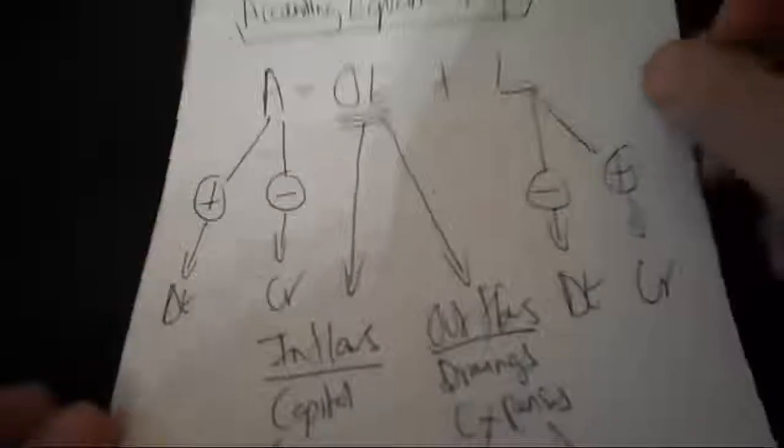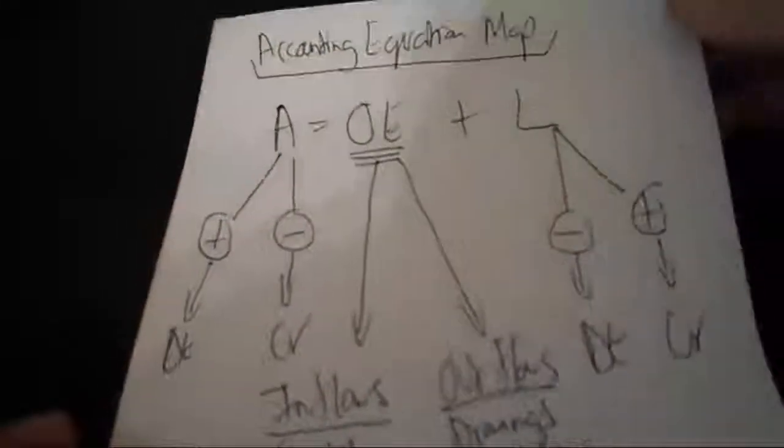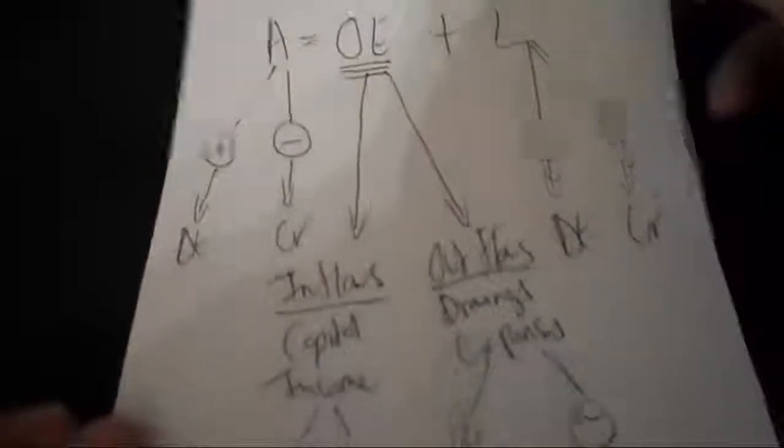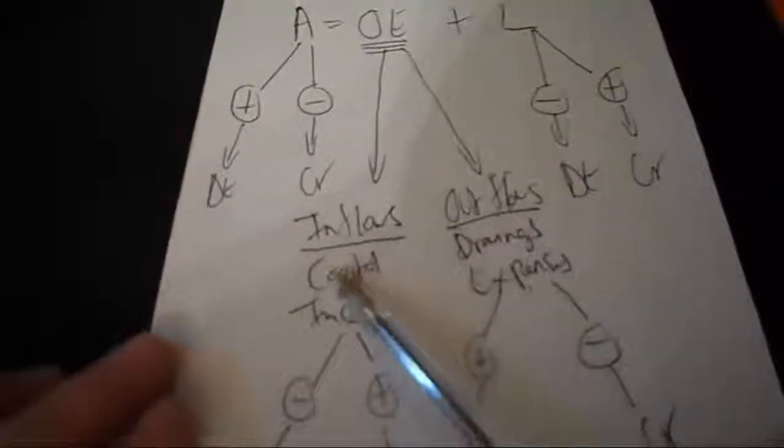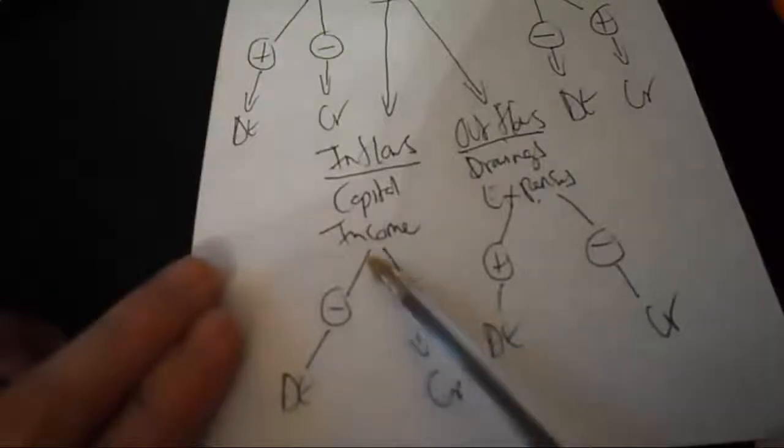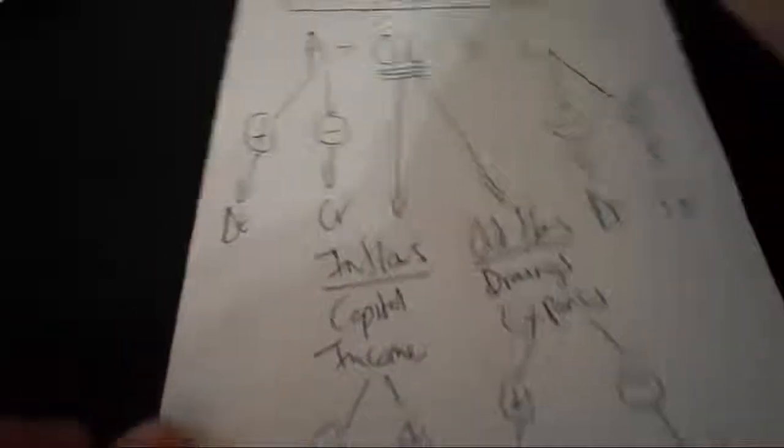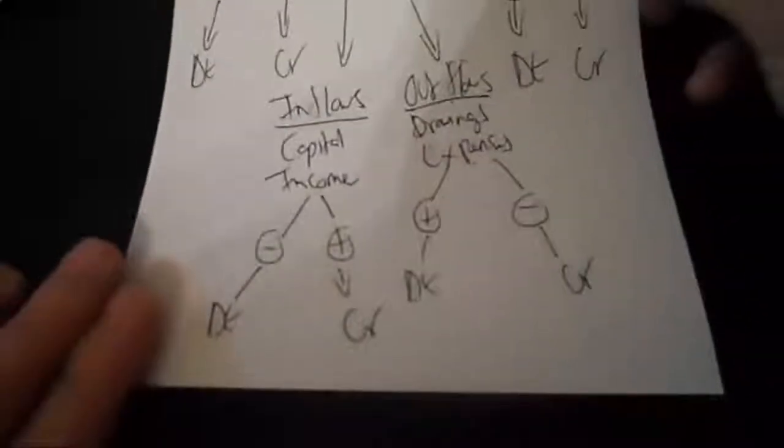So please study the accounting equation map, especially when doing adjustments, because if you can identify what item you're working with and where it should come, how it should increase and where it should come when it decreases, then this will help you a great deal.